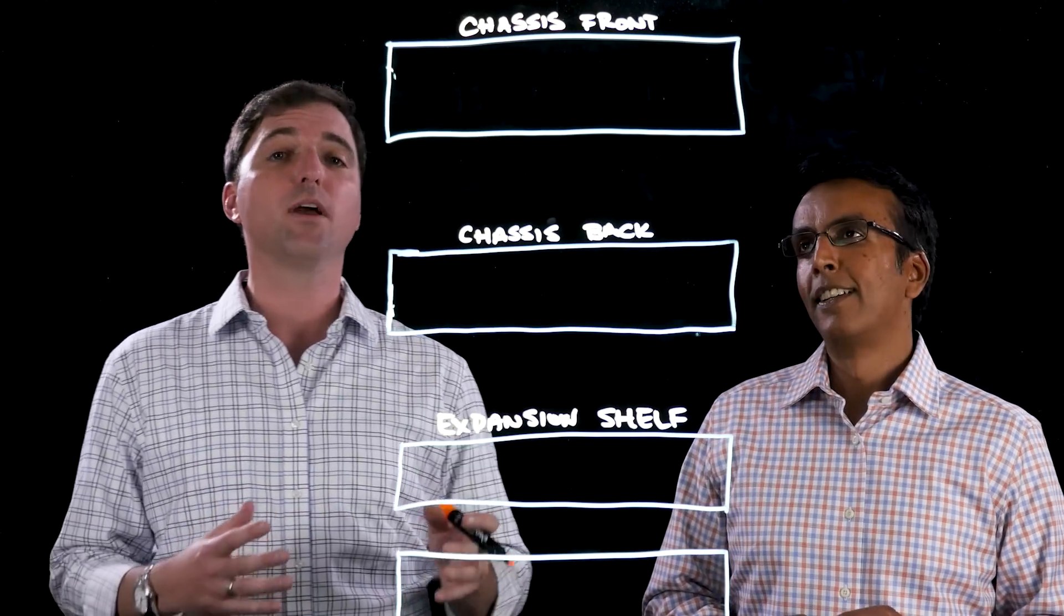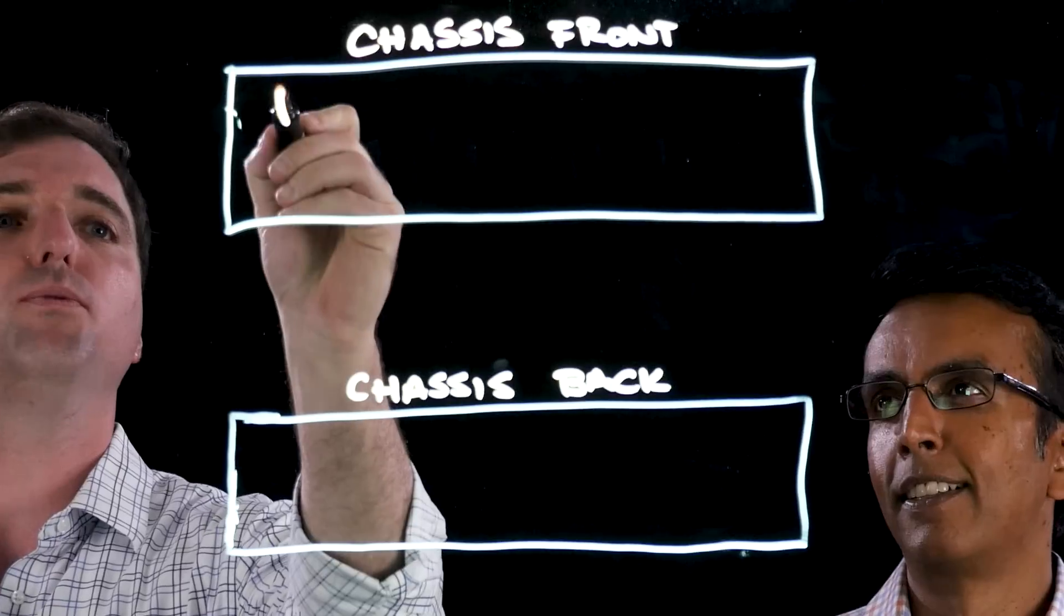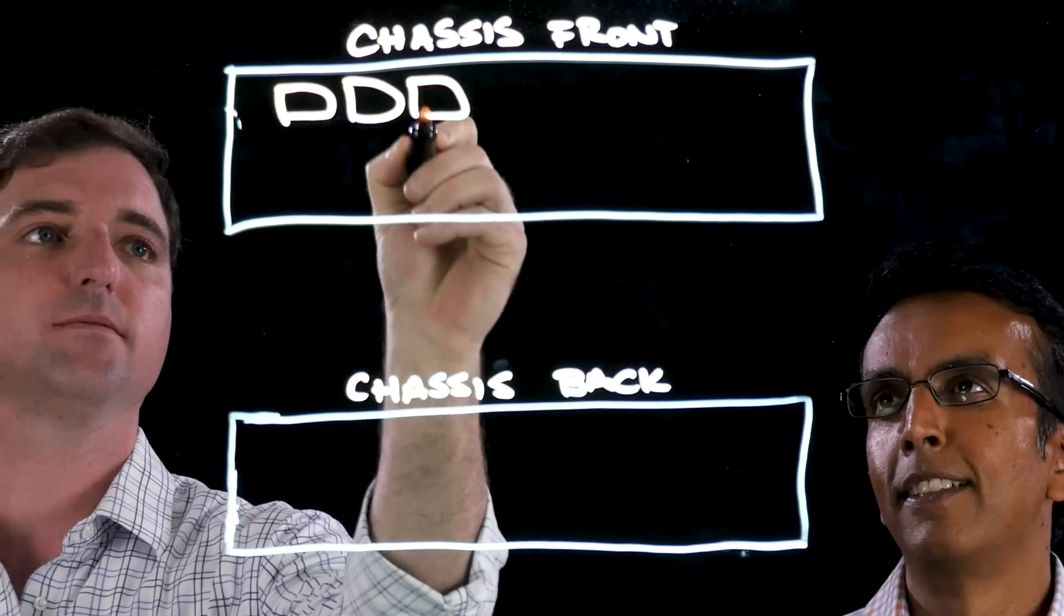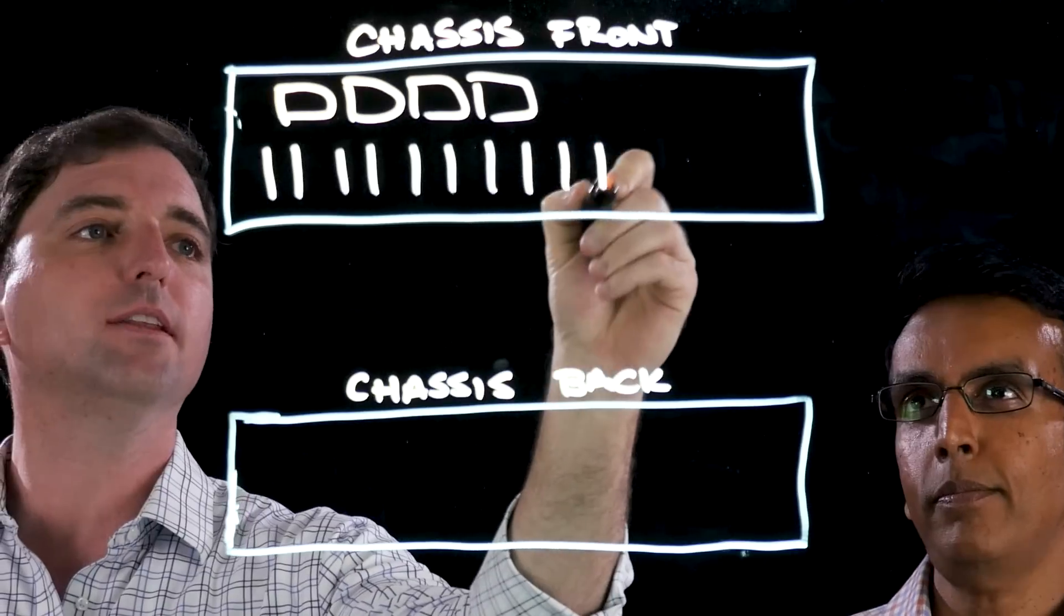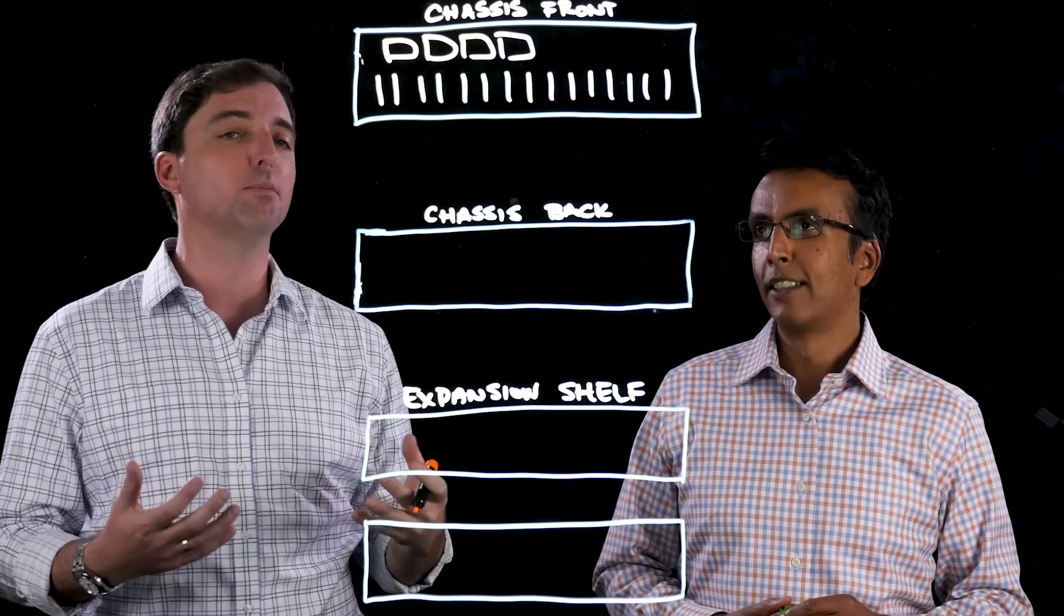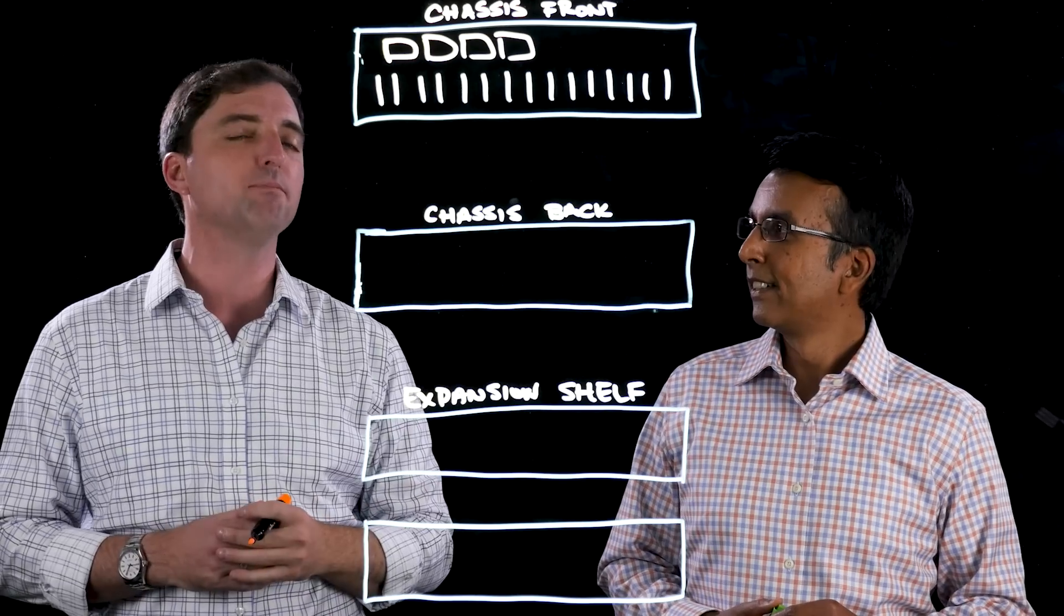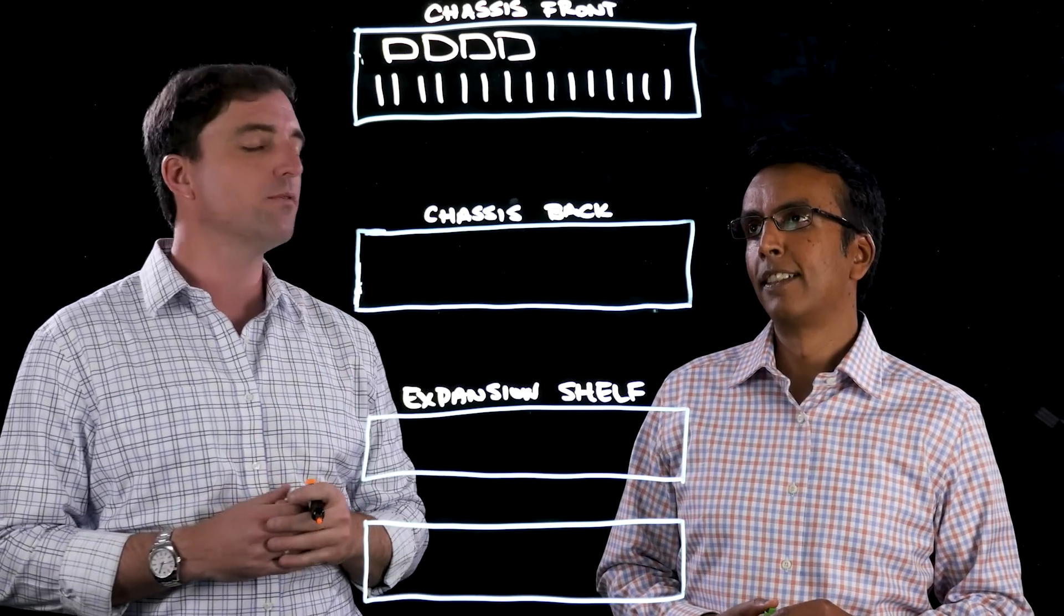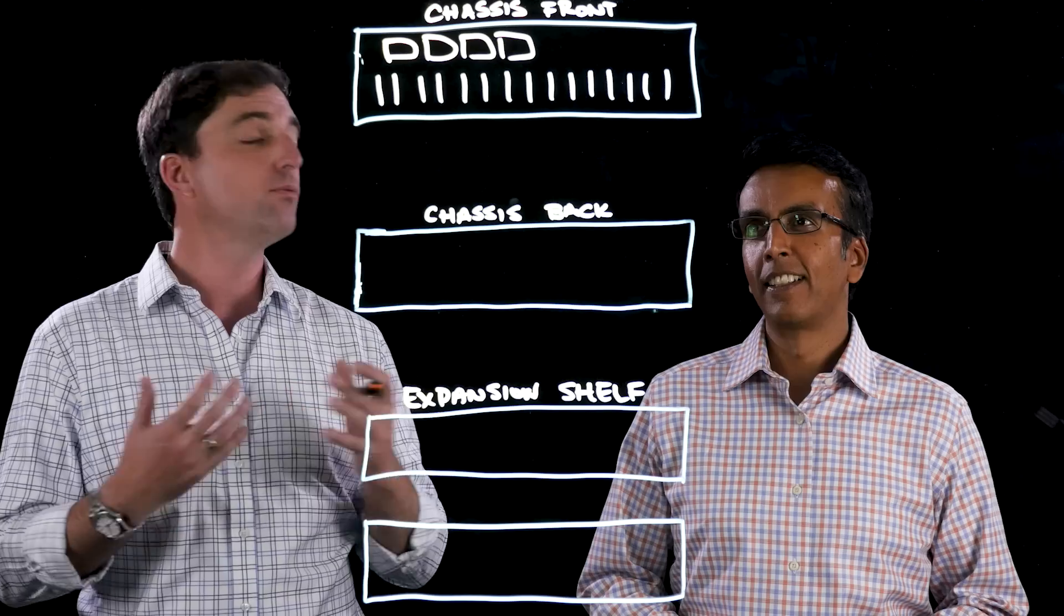So let's start off with the chassis. The FlashArray is a 3U chassis. It has up to four NVRAM devices and then 20 Flash modules inside the chassis. We pre-plumbed the chassis with NVMe capabilities from the beginning because we knew that this would be the next generation Flash coming up. So all of our NVRAM devices are dual-ported and connected to each one of the controllers and full NVMe capable.